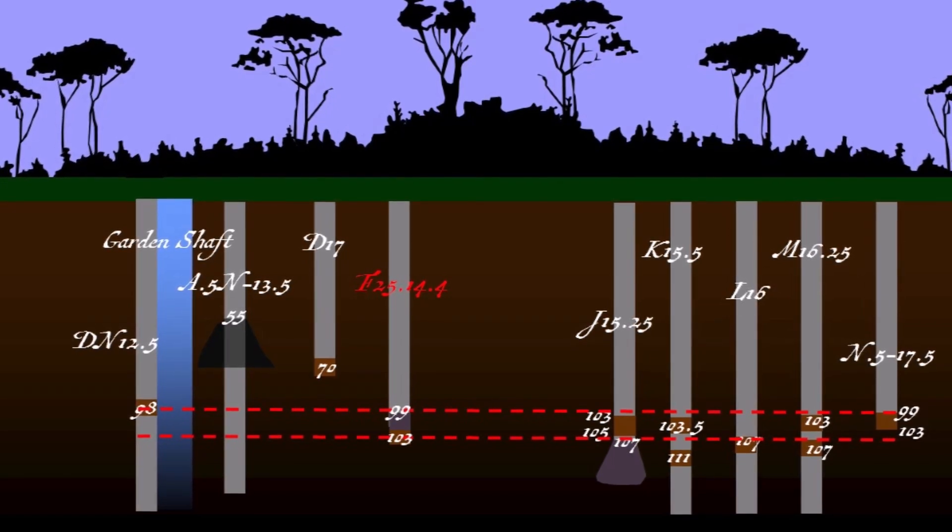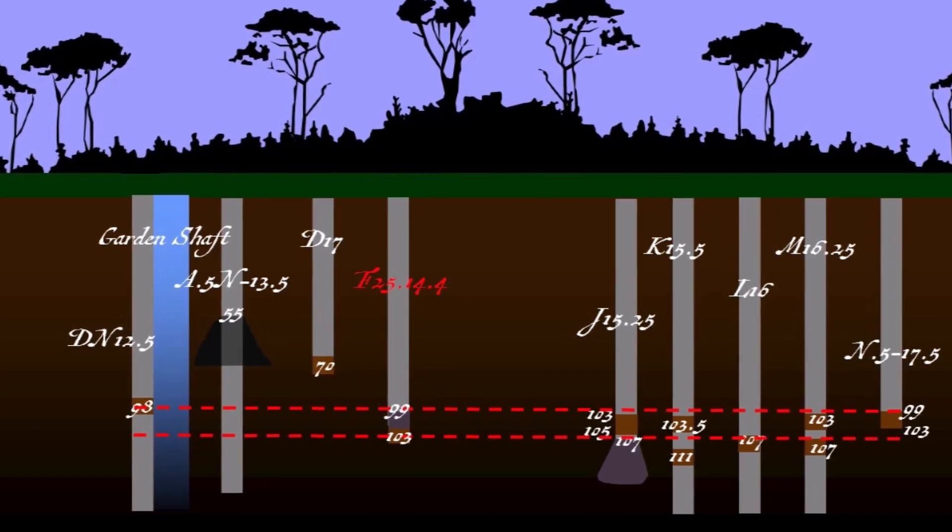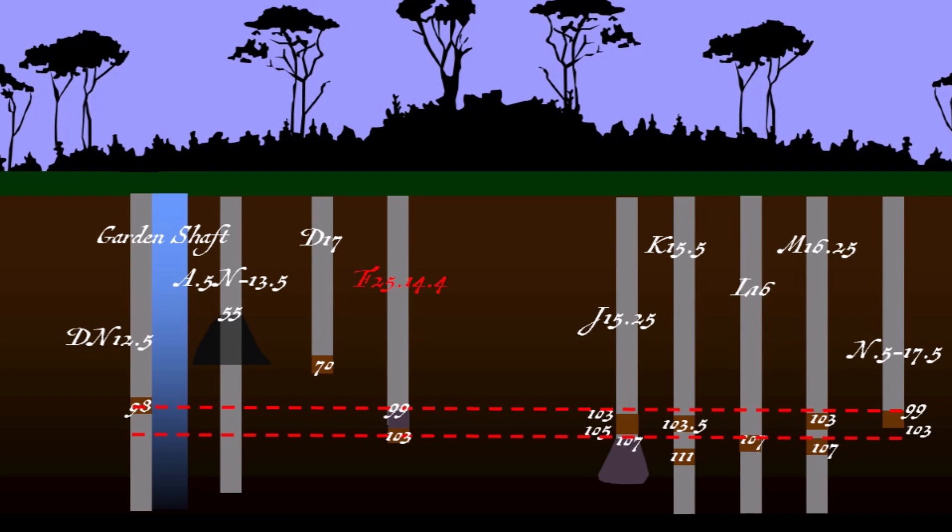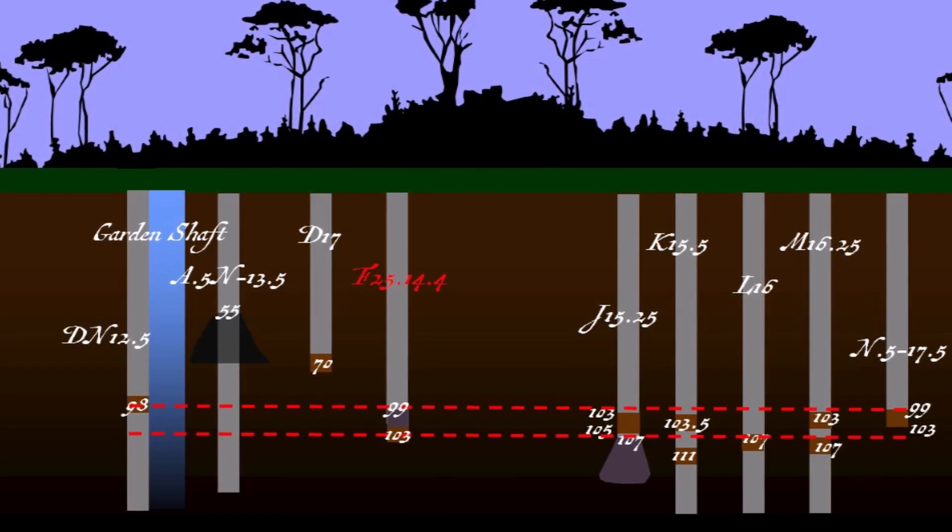then it stands to reason that the wood discovered at a depth of 98 feet in DN 12.5 back in Season 10 Episode 2 probably belongs to the more recently discovered Shallow Tunnel, and not the Deeper Tunnel which the crew has been following throughout the season.